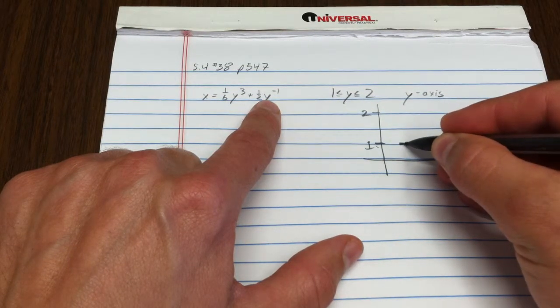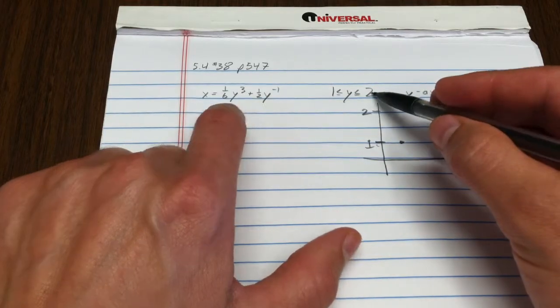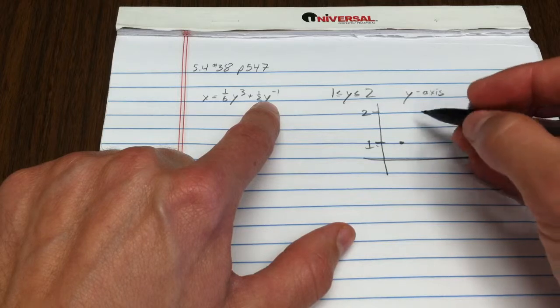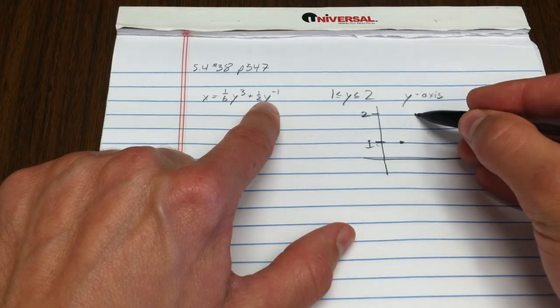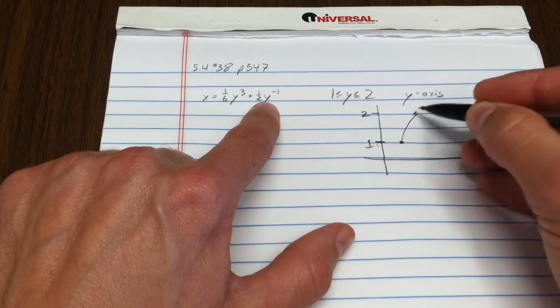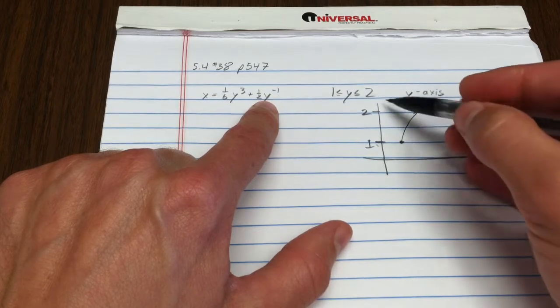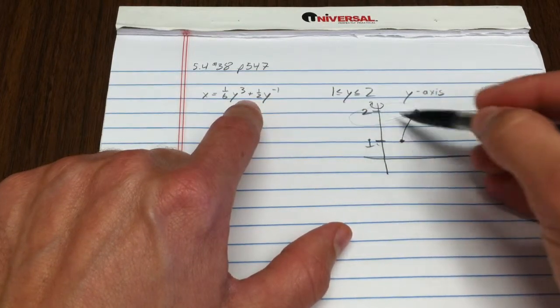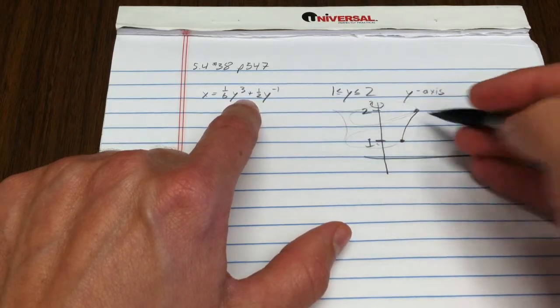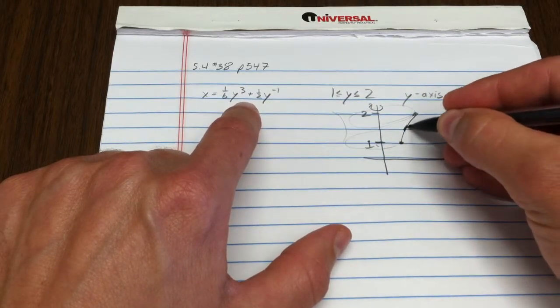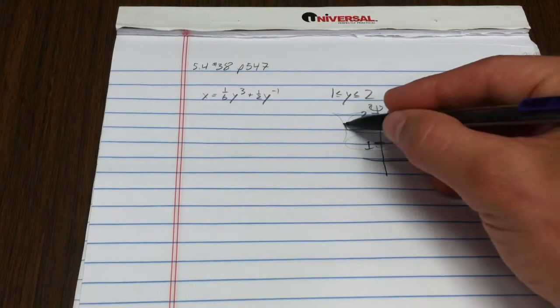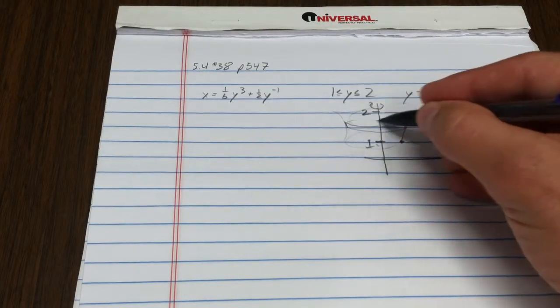When y is two, that comes out to eight-sixths plus a fourth, so something up there. Not a super exciting shape, something like that. We're going to rotate it around the y-axis, so you've got a shape that comes out like this. I'm concerned about the surface area, so what I'm going to do is take a little piece of the arc length and rotate it all the way around.